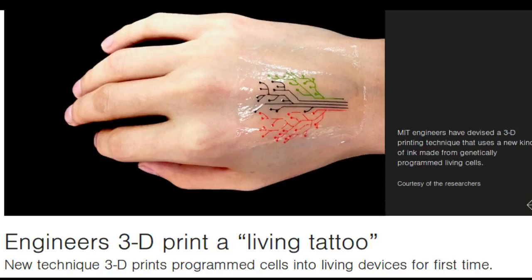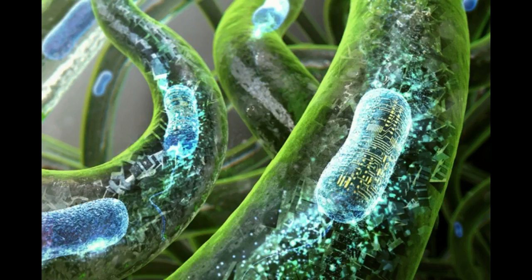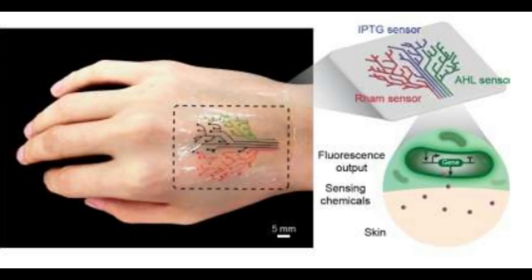MIT engineers have devised a 3D printing technique that uses a new kind of ink made from genetically programmed living cells. The cells are engineered to light up in response to a variety of stimuli.